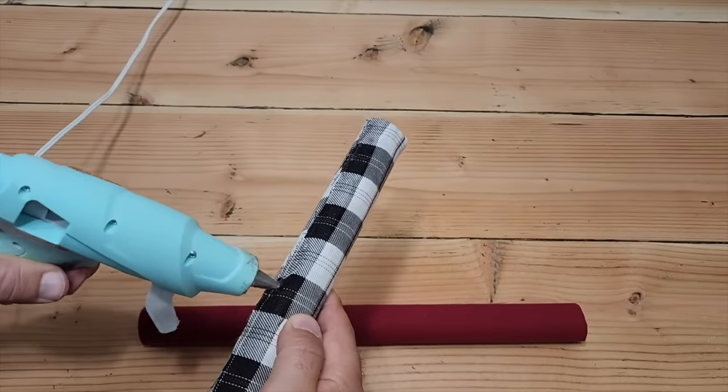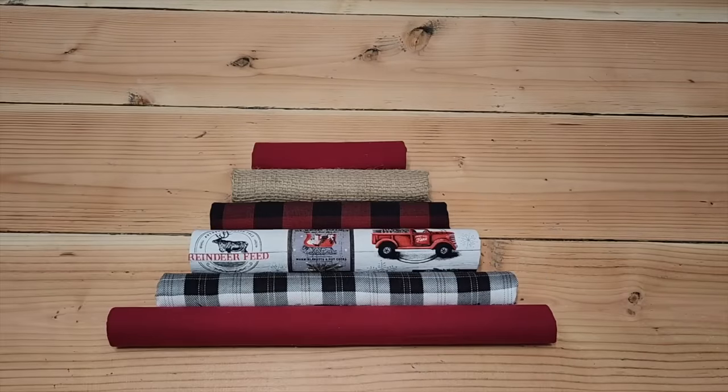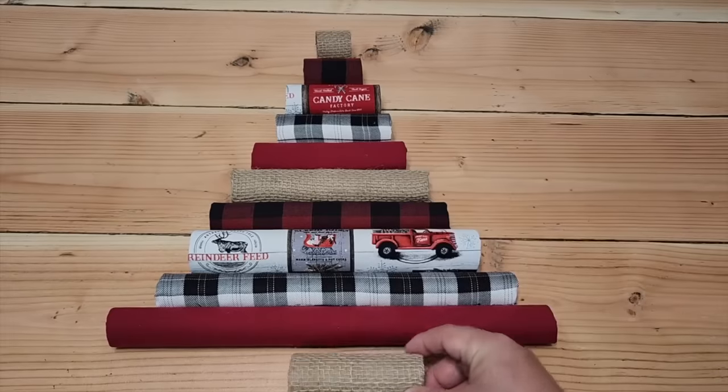Once we got at least two tubes that are covered in the fabric, run a bead of glue, put these two tubes together. Just keep on going and I use some burlap also in there to intermingle. Last but not least, look at that trunk.